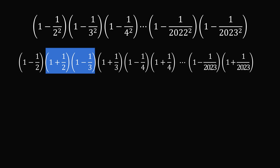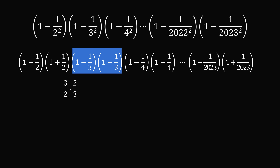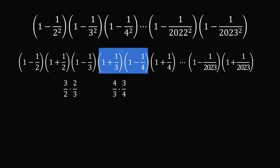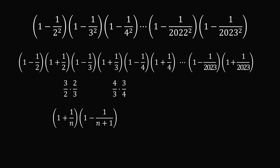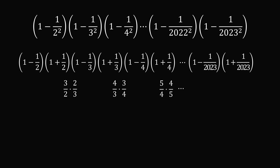Now look at 1 plus 1 half multiplied by 1 minus 1 third. This is 3 over 2 multiplied by 2 over 3, which equals 1 because the numerator cancels with the next denominator and vice versa. The next pair — 4 over 3 multiplied by 3 over 4 — also cancels to 1. In general, 1 plus 1 over n multiplied by 1 minus 1 over n plus 1 simplifies to n plus 1 over n times n over n plus 1, which equals 1. So every single pair of terms in the middle cancels to a product of 1.